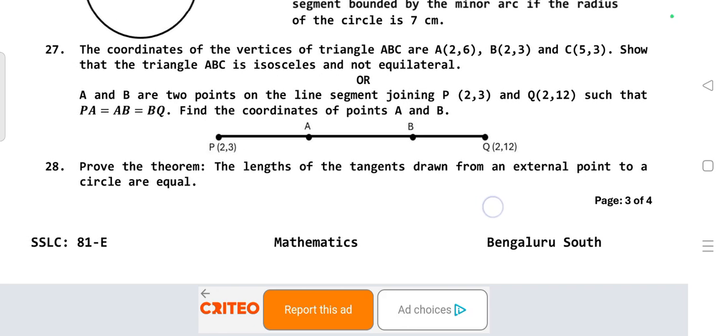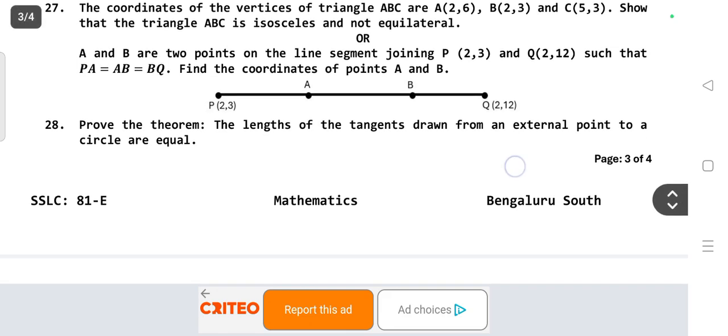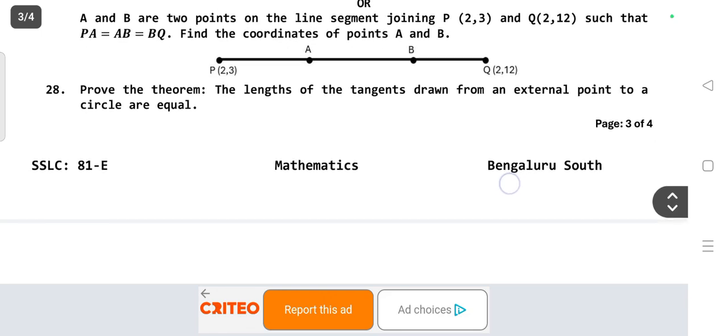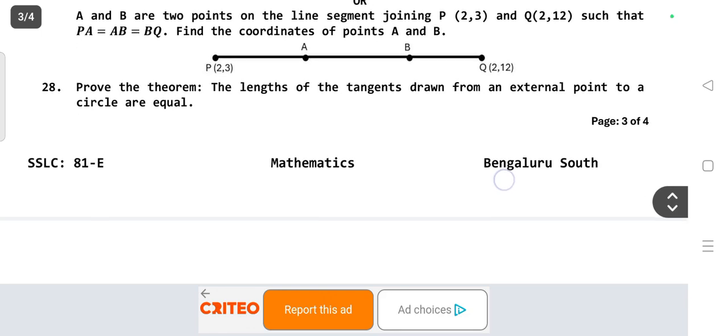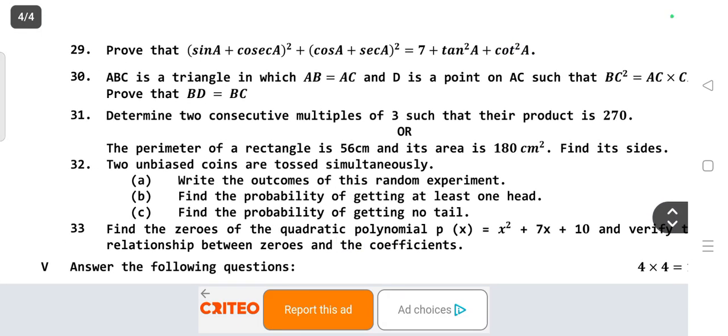OR: A and B are two points on the line segment joining P(2,3) and Q(2,12) such that PA equals AB equals BQ. Find the coordinates of points A and B. Prove the theorem: The lengths of tangents drawn from an external point to a circle are equal. This is from chapter 7, Circles. Question 29: Prove that (sin A + cos A)² + (cos A + sec A)² equals 7 + tan²A + cot²A.